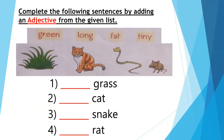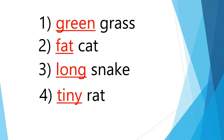Complete the following sentences by adding an adjective from the given list. You can look in your book page number 9. The first one is grass, second is cat, third is snake, and the last one is mouse. We have also been given some adjectives like green, long, fat, tiny, etc.